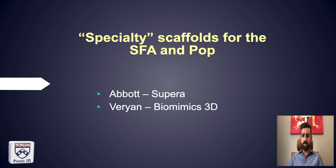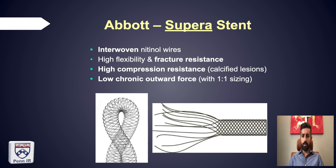Moving to newer technology — the Supera stent by Abbott. Rather than a laser-cut tube, it's made up of interwoven superwoven nitinol wires. This configuration allows high flexibility and significant fracture resistance. If deployed in an over-packed conformation it can provide high compression resistance, suited for high levels of calcium commonly encountered in certain FEMPOP segments. With one-to-one sizing there is low chronic outward force, resulting in less chronic trauma to the stented vessel.